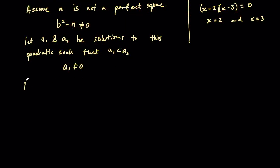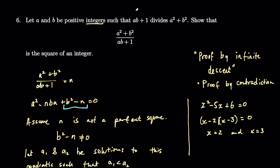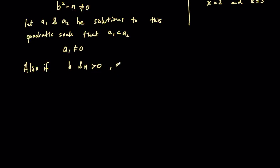Also, we can say, if b and n are greater than 0, remember that's a condition of the question, they are positive integers, and if a and b are positive integers, the result must be a positive integer. So if b and n are positive integers greater than 0, a1 cannot be less than 0 because a squared plus b squared over ab plus 1 is greater than 0. Because all of these are positive integers, so this must be greater than 0. In order for the solution to be negative, we'd have to have a negative solution here. And then, therefore, we can say a1 is greater than 0 and less than a2.